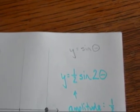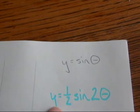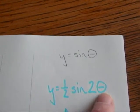All right, let's take our parent function, y equals the sine of theta, and alter it to become the child function, y equals one half the sine of two theta.